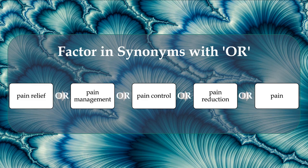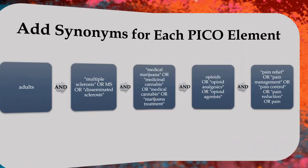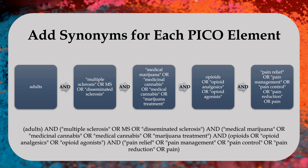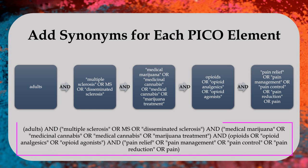By including similar terms, we're lowering the likelihood of potentially missing out on relevant articles to our topic. We can further expand our search's scope by factoring in synonyms for our other keywords and ultimately combining them to create the full search phrase.